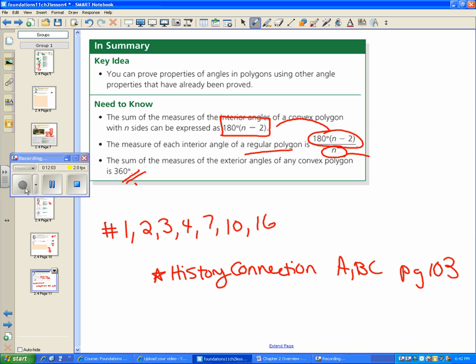Your assignment is 1, 2, 3, 4, 7, 10, 16 and you also have a history connection about Buckminster Fullerene on page 103.